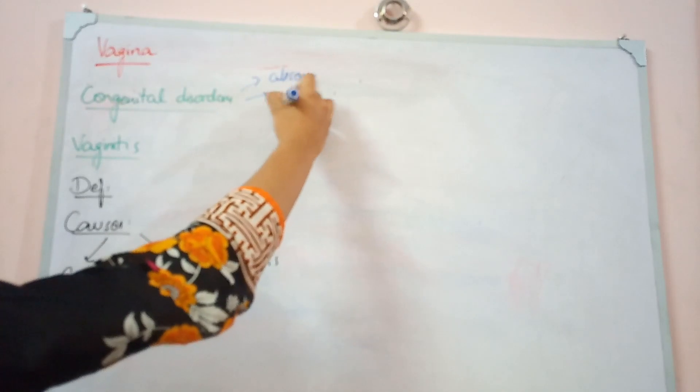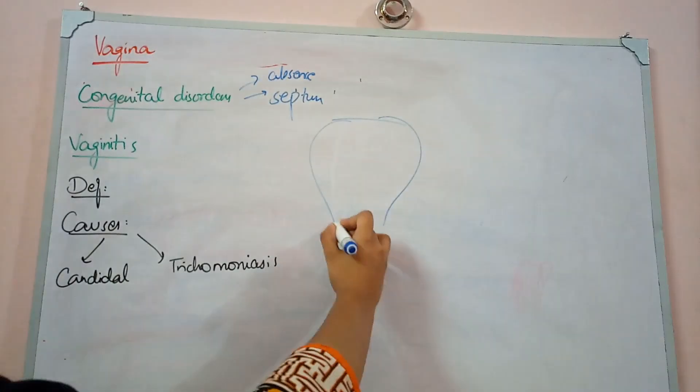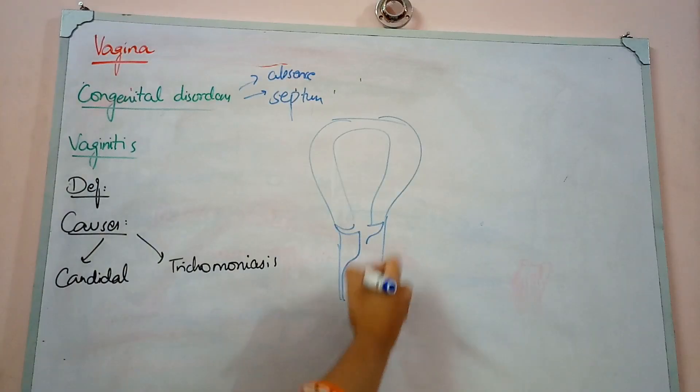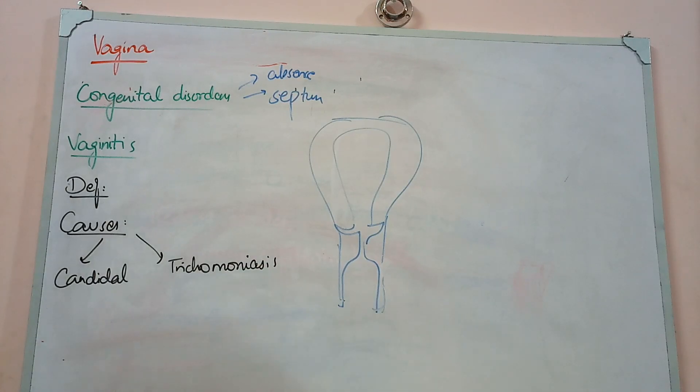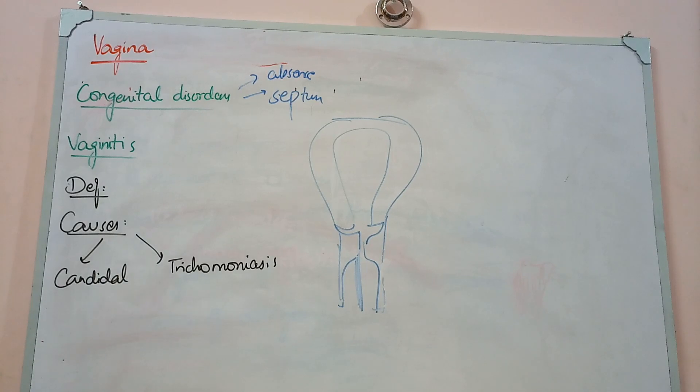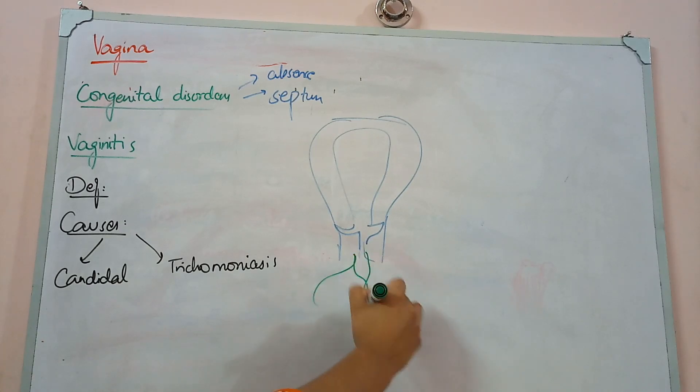Another thing is that the vagina may have a septum or partition - we call it septate. Sometimes it becomes double, so there is double vagina with two openings in the external area. We can also have some cysts congenitally present inside the vagina, but these are not very common.